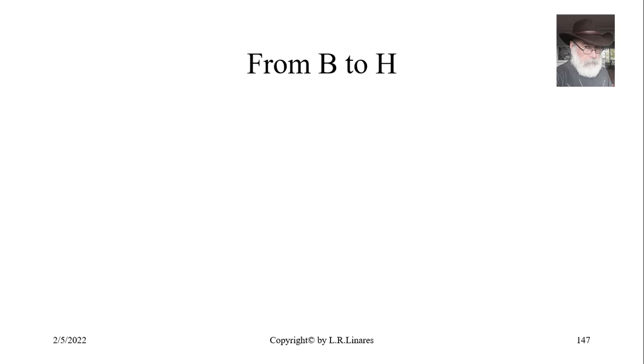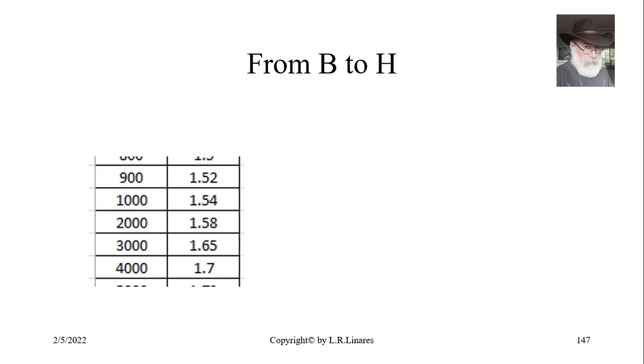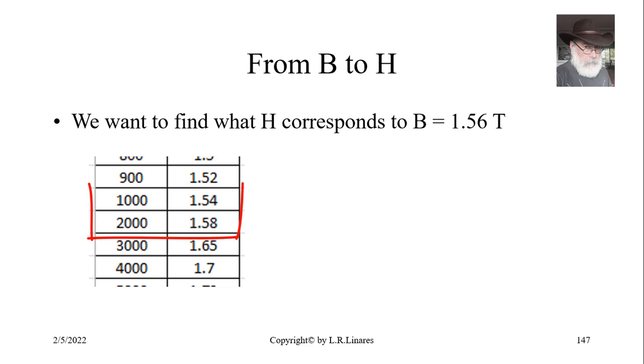Let's do it backwards. Now we go from B to H. And this is even more interesting. Let's take a zoom at part of the table. And suppose that the question is, we want to find what is the value of the magnetic field H that corresponds to a flux density of 1.56 Teslas. Hmm. That would be between 1000 amps per meter and 2000 amps per meter. Right? Per meter. That's right.